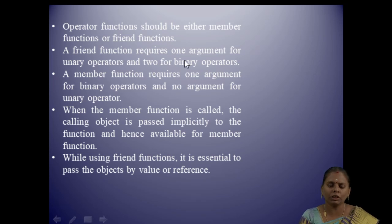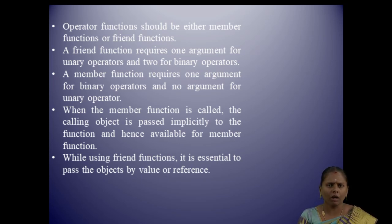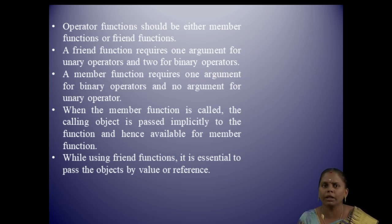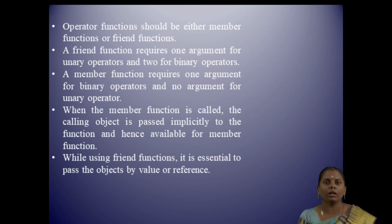We can use either a friend function or a member function to perform operator overloading. If you use a friend function, you have to explicitly pass all arguments to the operator function. If you use a member function, you pass one argument for binary operators and no argument for unary operators, because an object is implicitly passed as one argument.